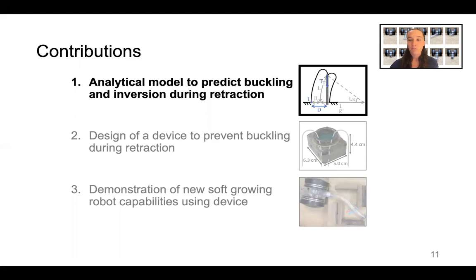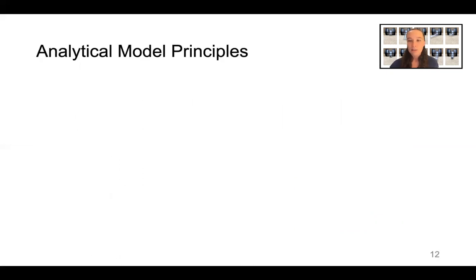First, I'll talk about the analytical modeling. Let's start with a little bit of terminology. This is a section view of the soft-growing robot. The distal end is what we call the tip. The outer material is called the wall, and the inner material is called the tail.